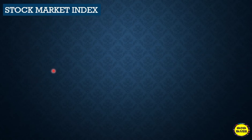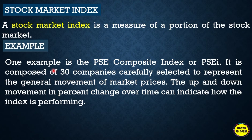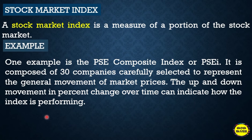A stock market index is a measure of a portion of a stock market. For example, the PSE Composite Index or PSEI is composed of 30 companies carefully selected to represent the general movement of market prices. The up and down movement in percent change over time can indicate how the index is performing.